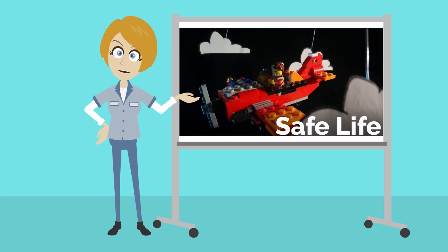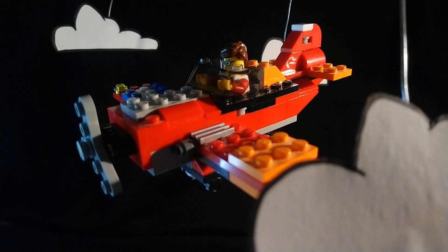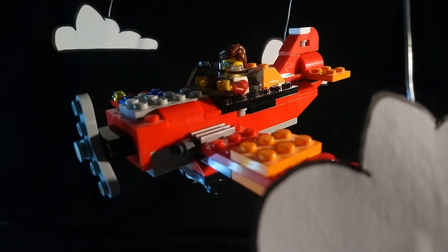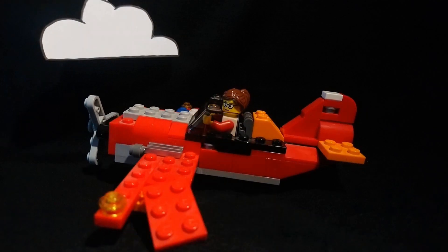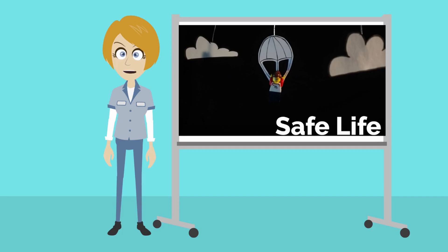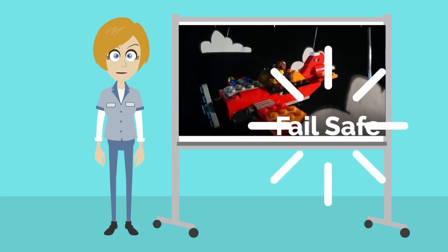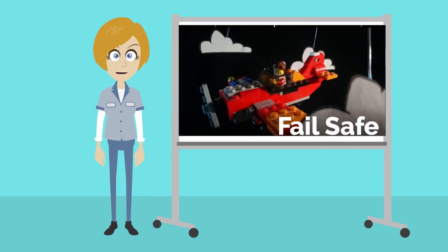Everything seems to go okay for the first several flights, but one day she encounters a gust of wind. It overloads the wing structure, causing the orange connector piece to fail. And unfortunately for Leah, she has also lost the rear section of her wing because that was the only attachment point — definitely not good. Because it was designed for safe life, the part was not intended to fail during its lifetime, and it wasn't able to handle the excess loading from the gust.